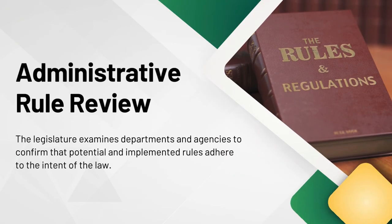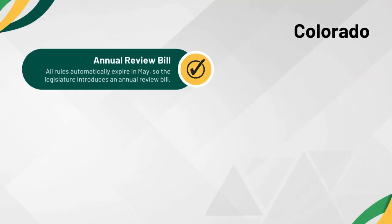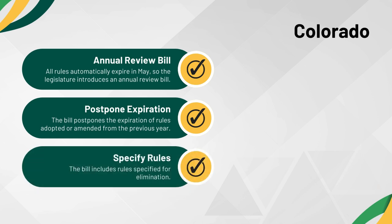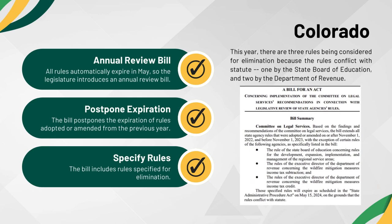Administrative rule review is when a legislature examines departments and agencies to confirm if potential and implemented rules adhere to the intent of the legislature and the law. Review may occur prior to or after adoption, and the approaches used by legislators across the country are varied. Colorado automatically expires all rules in May. As a result, their legislature has an annual rule review bill, which does two things: first, it postpones the expiration of rules adopted or amended from roughly the previous year; second, it includes rules specified for elimination. This year, there are three rules being considered for elimination because the rules conflict with statute.